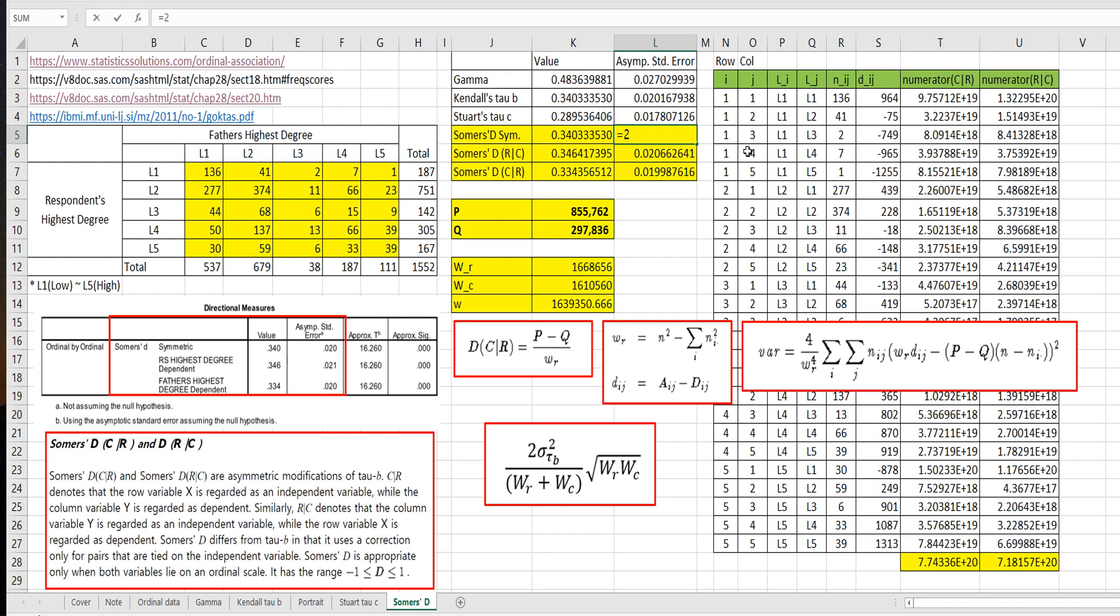2 multiplied by tau v squared and multiplied by sqrt, WR, WC, and over WR plus WC. And finally, we need to use square root, sqrt.